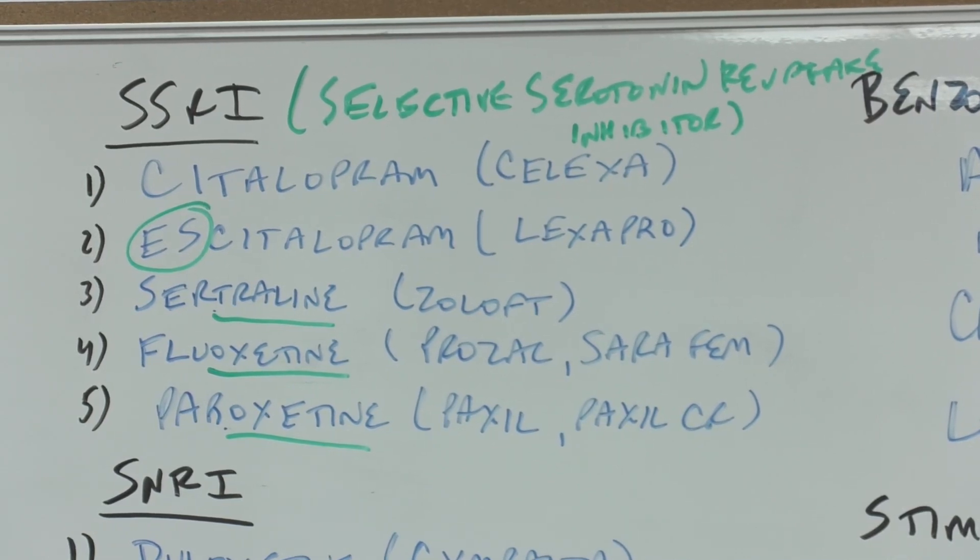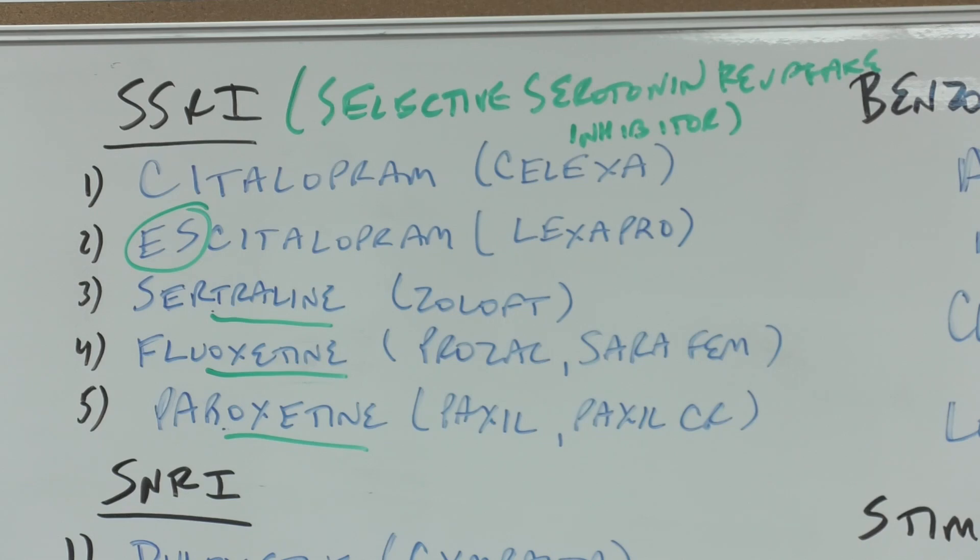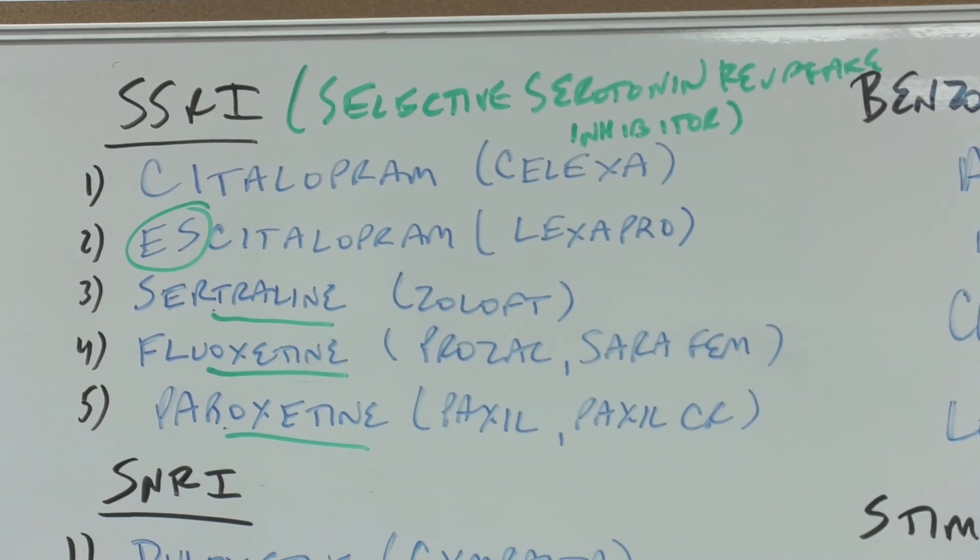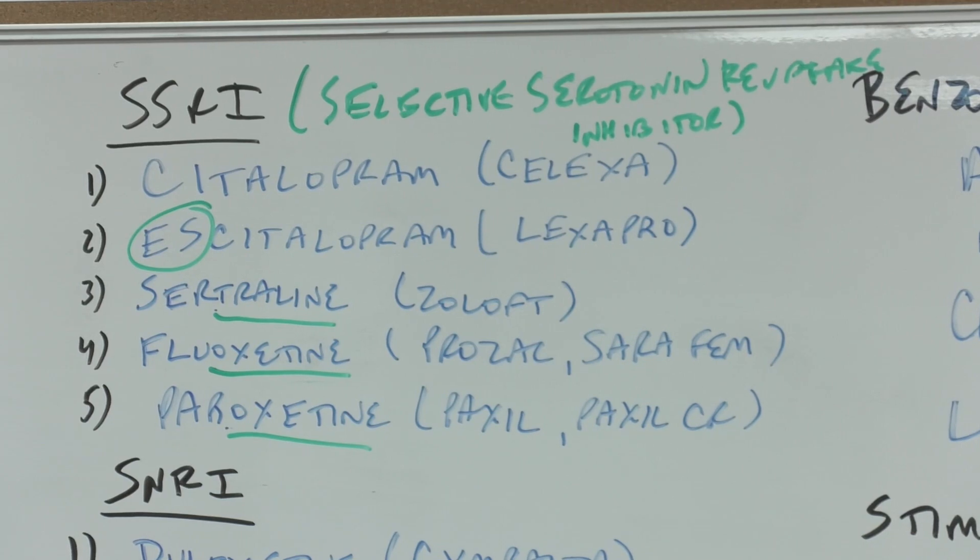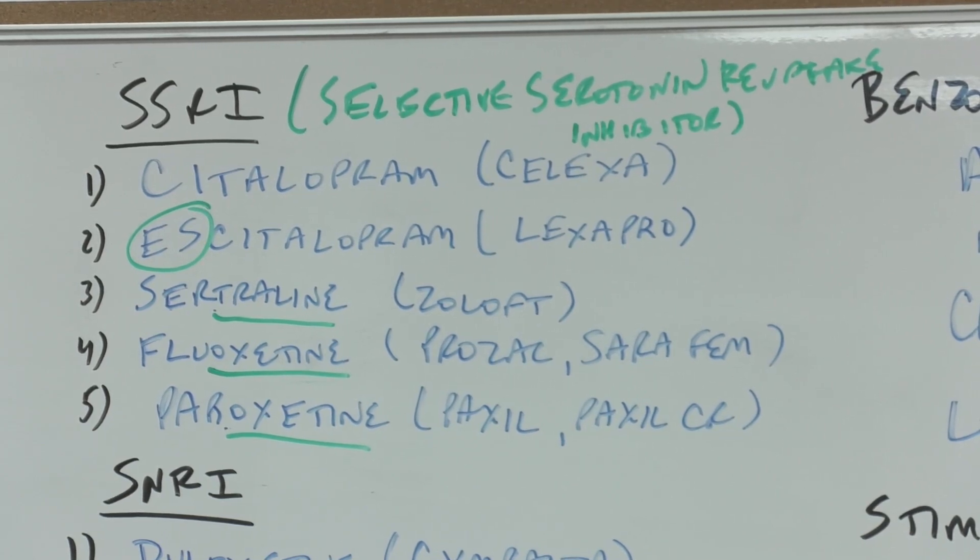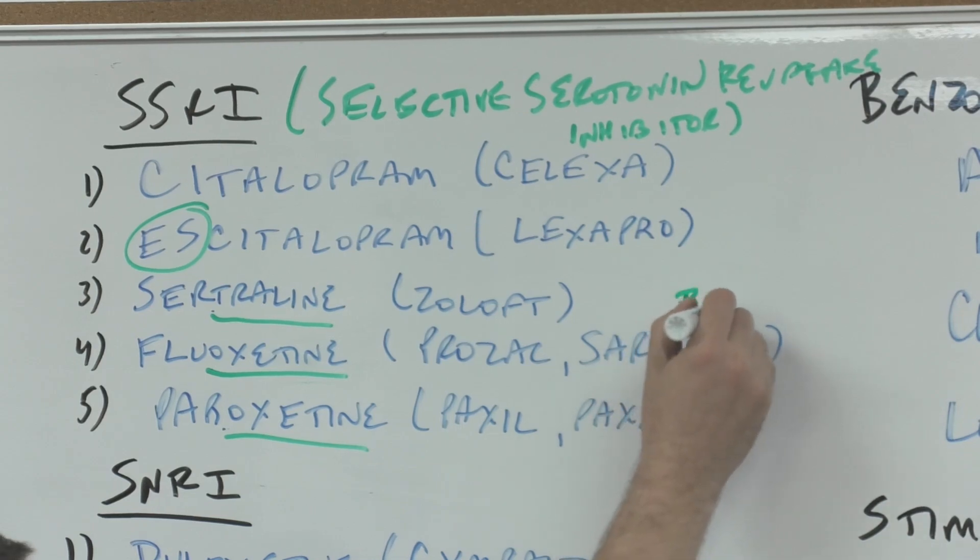Duloxetine is an SNRI, and later we're going to find a non-stimulant ADHD medication atomoxetine, so this oxetine ending you really have to be careful with. Fluoxetine has two brand names: Prozac was the first, it sounds like a strong drug. Then Sarafem for premenstrual dysphoric disorder PMDD. Paroxetine is Paxil and Paxil CR controlled release.